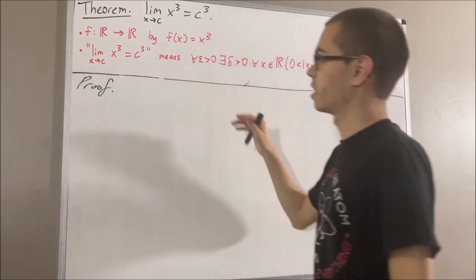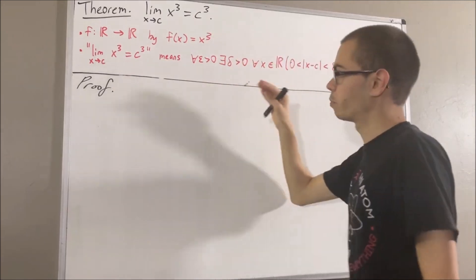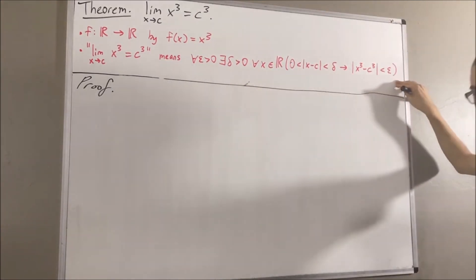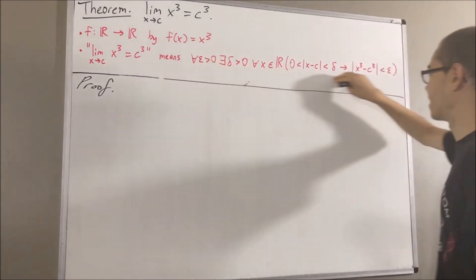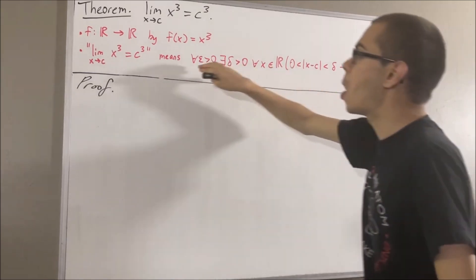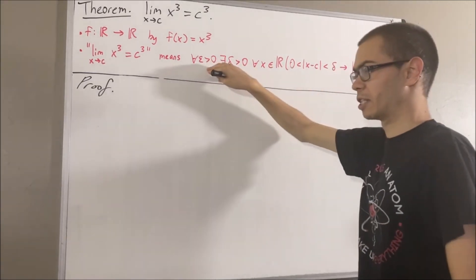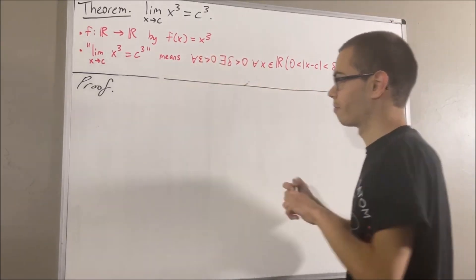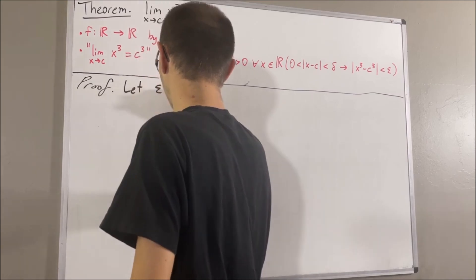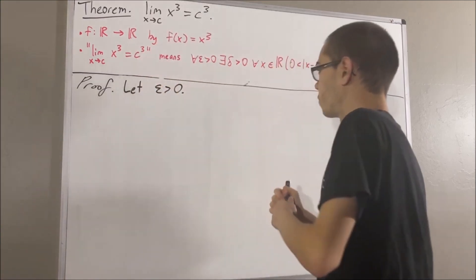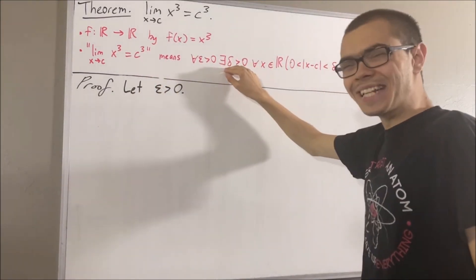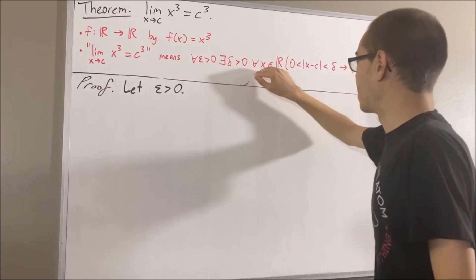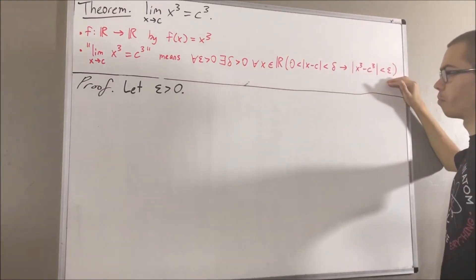So to prove this, we are going to prove this statement. And since we're trying to prove a statement about all epsilon greater than zero, let's give ourselves an arbitrary epsilon greater than zero. The goal from here is to find a delta greater than zero that makes this statement turn out true.